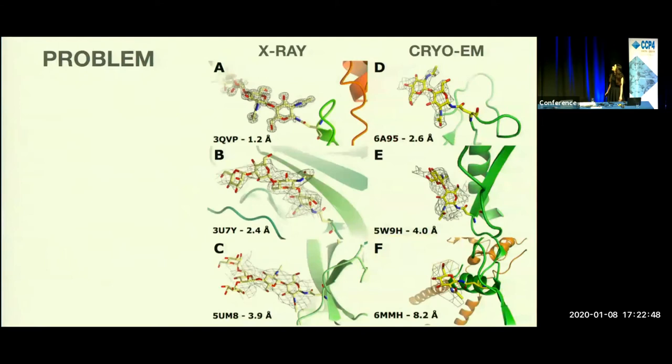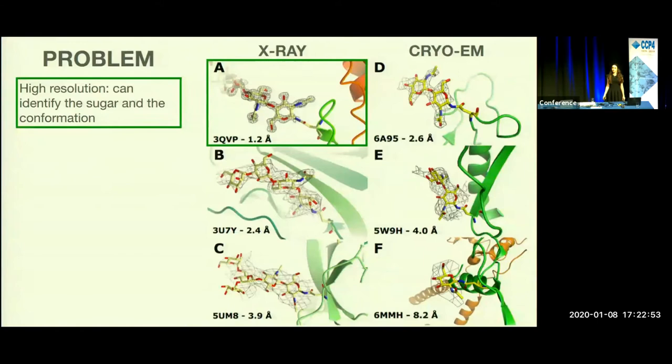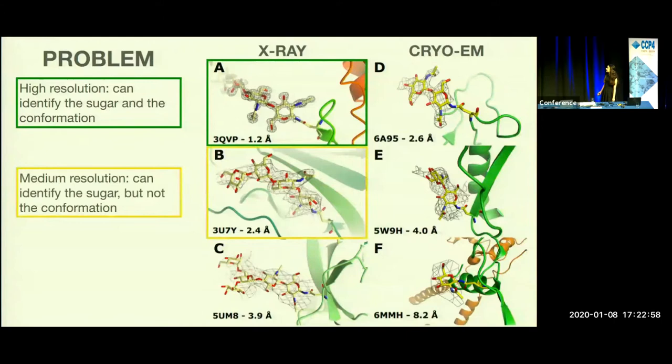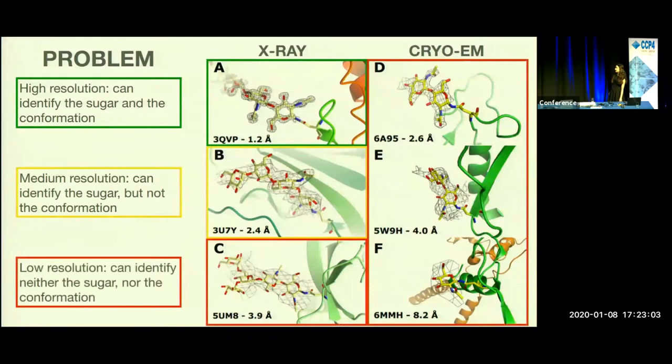All of this leads to the following problem. While at high resolution it's easy enough to distinguish the sugar and its conformation, as the resolution decreases we can identify the sugar but not the conformation. And at low resolution we can identify neither of those. And this is also the case with cryo-EM.